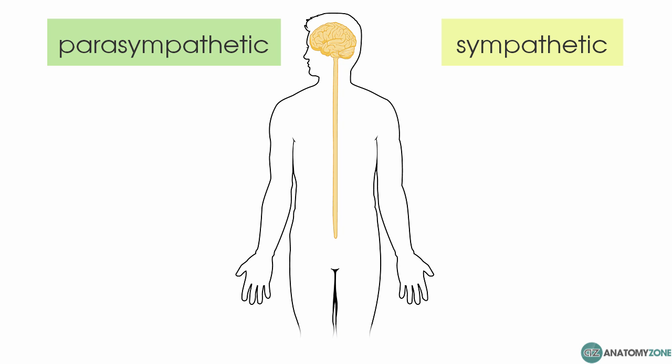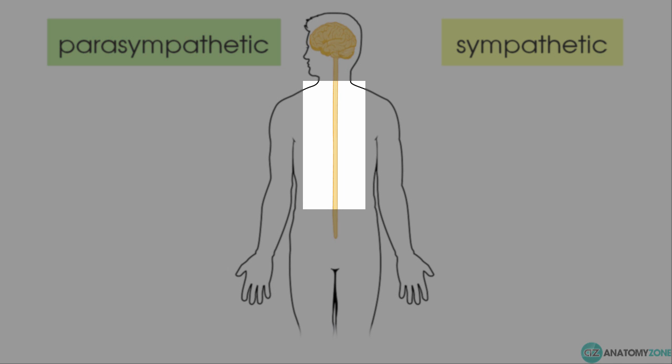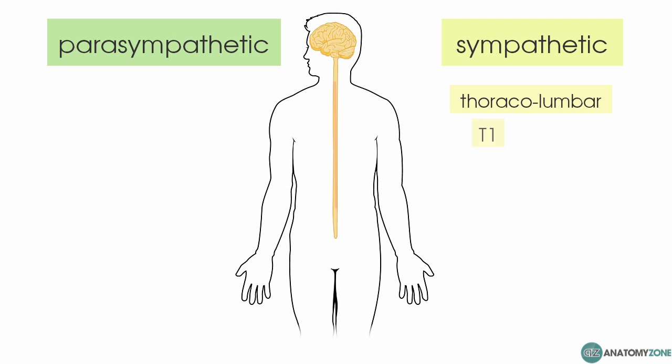In terms of location, the sympathetic outflow originates in the thoracolumbar regions of the spinal cord, extending from spinal segments T1 to L2.